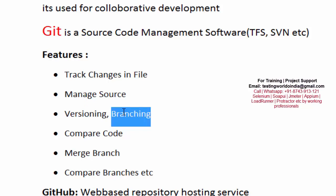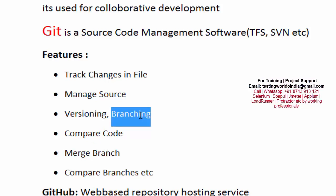If a team member is new, I don't want to give them complete access to my code — we can use branching for that. Git also allows us to compare code: if I've written some code and someone else made changes to the same file, I can compare what changed, or compare the current file with a previous version. We can also merge branches — for example, if a fresher has written correct code on a branch, I can merge it into the master branch.